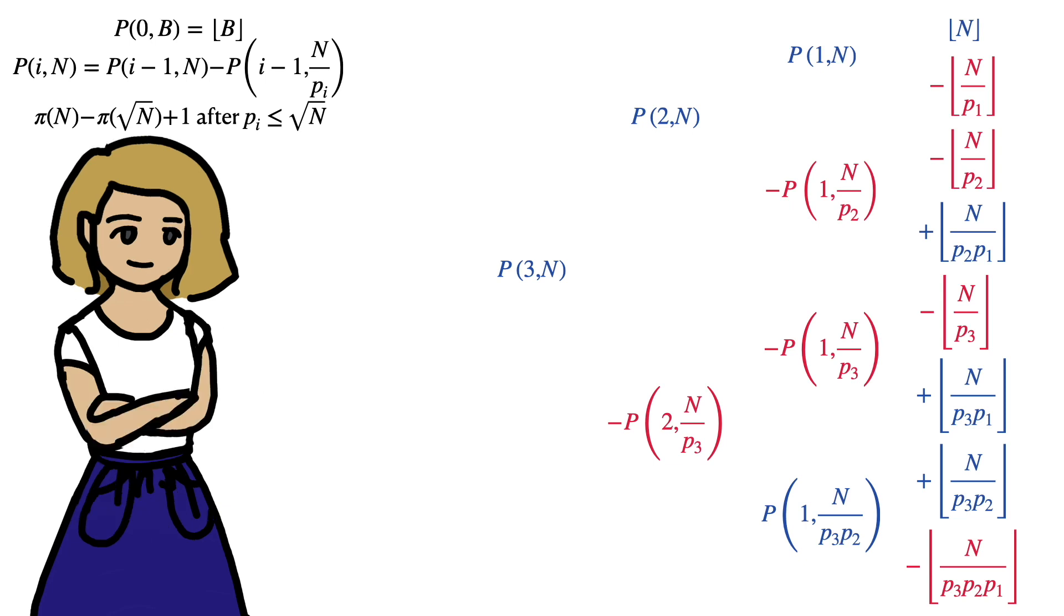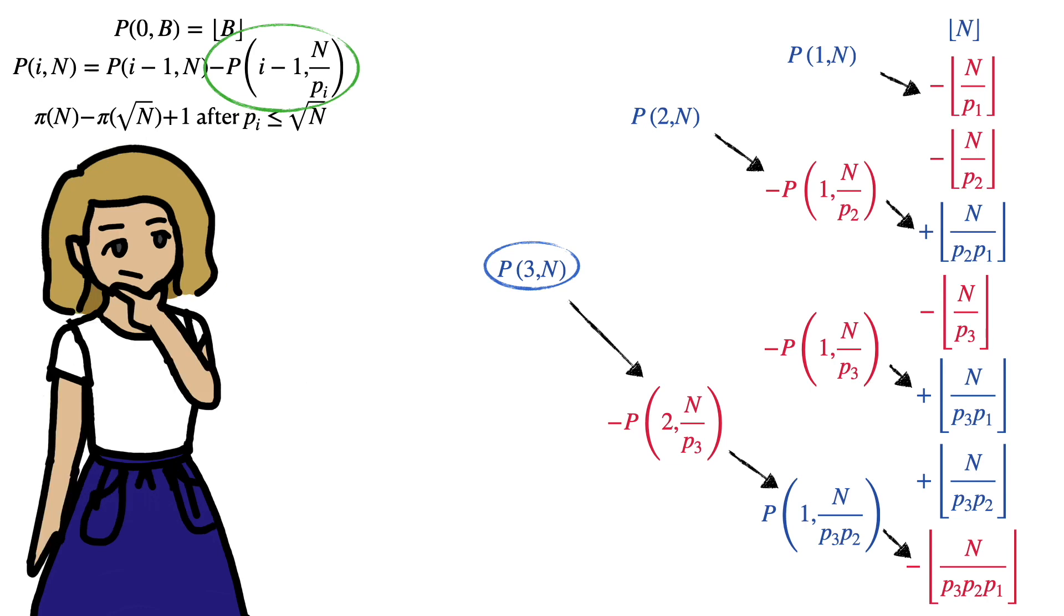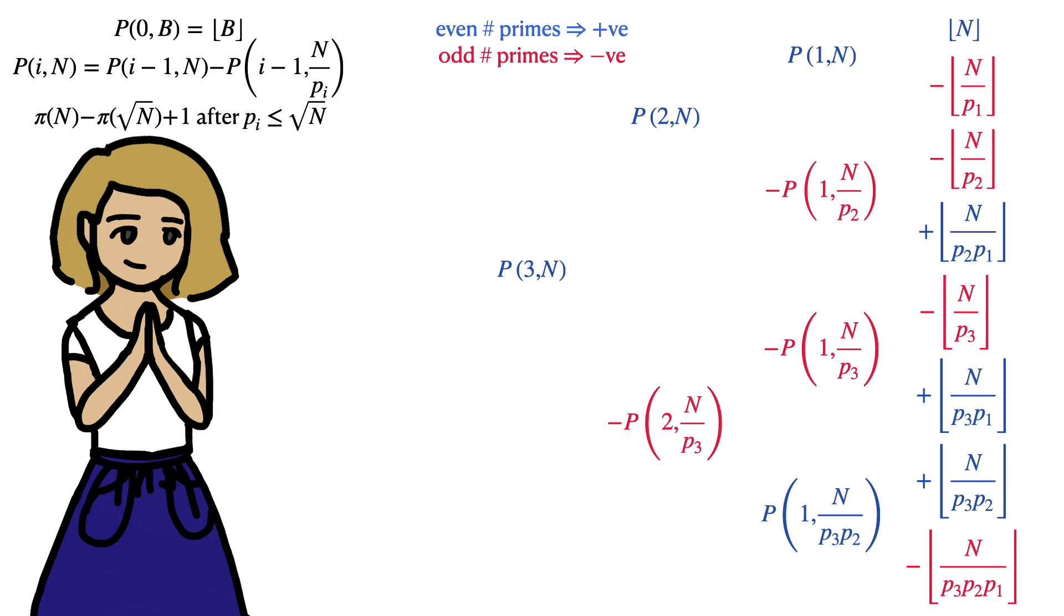Looking into the sign out the front, we begin with a positive, and every time a new prime is introduced into the denominator, the sign changes, as necessitated by this negative term. So, if there are an even number of primes in the denominator, the sign out the front ends up positive. If there are an odd number of primes, the sign is negative. So, that's sign taken care of.